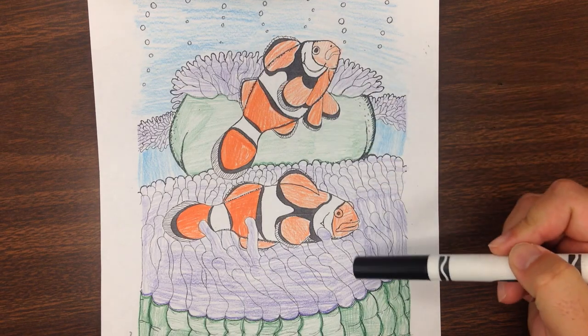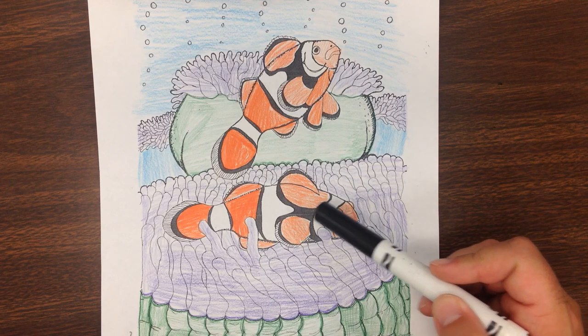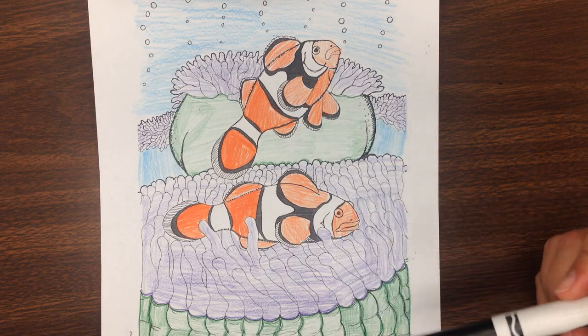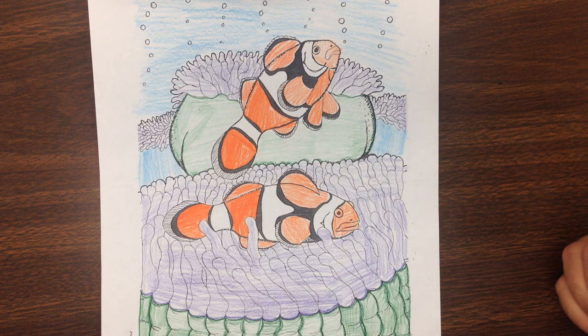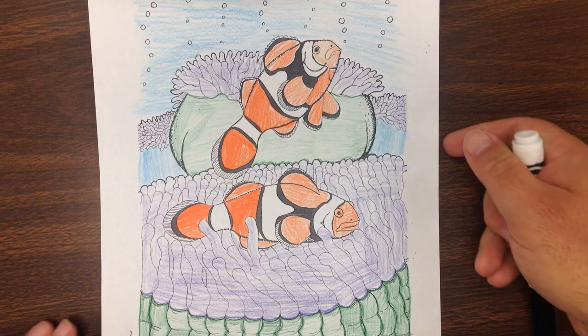And when we look at the pattern we see this kind of white, black, and orange pattern with the black really helping the fish stand out. So let's go ahead and move on to the next step.